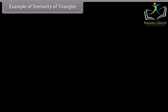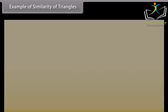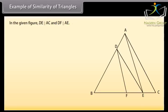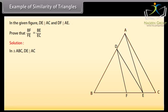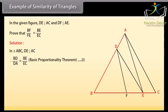Example of similarity of triangles: In the given figure, DE is parallel to AC and DF is parallel to AE. Prove that BF upon FE equals BE upon EC. Solution: In triangle ABC, DE is parallel to AC. Therefore, BD upon DA equals BE upon EC by the basic proportionality theorem — mark it as equation 1.